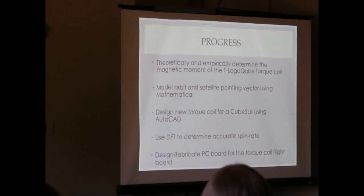We had to design a new torque coil, new cube sets, much smaller than the old one. And we also used a discrete Fourier transform, which I'll discuss, that actually allows us to figure out what the spin rate of the satellite is. And finally we designed a PC board for the flight board that's going to control the torque coils, turn them on and off.